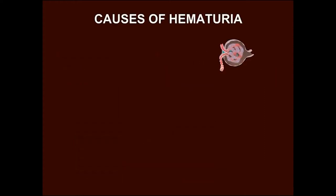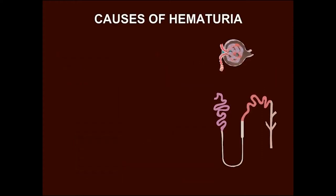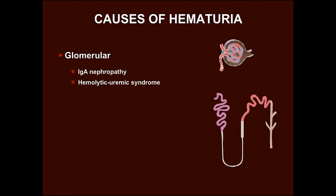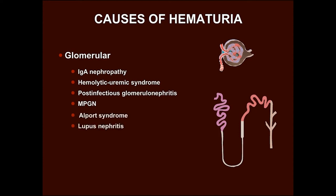Causes of hematuria are classified as glomerular and non-glomerular. Glomerular hematuria can be caused by IgA nephropathy, hemolytic uremic syndrome, post-infectious glomerulonephritis, membranoproliferative glomerulonephritis, Alport syndrome and lupus nephritis.